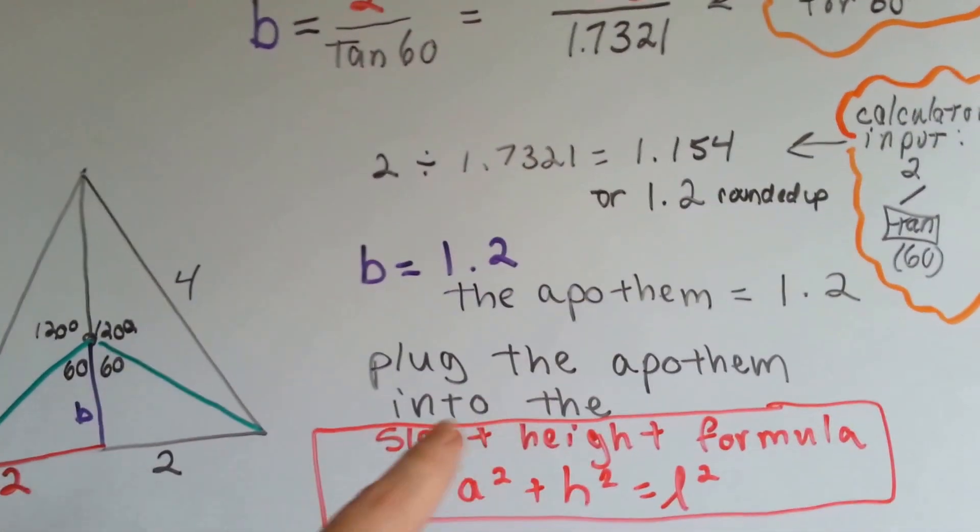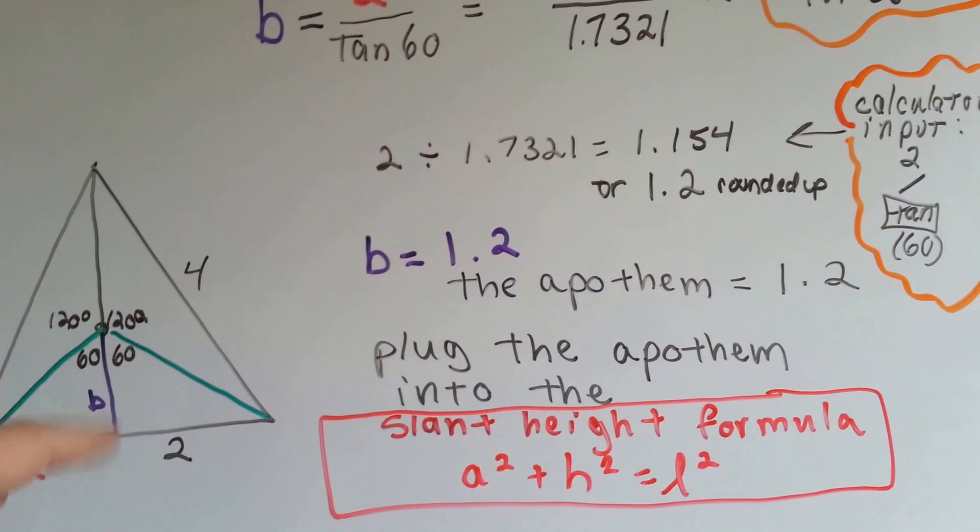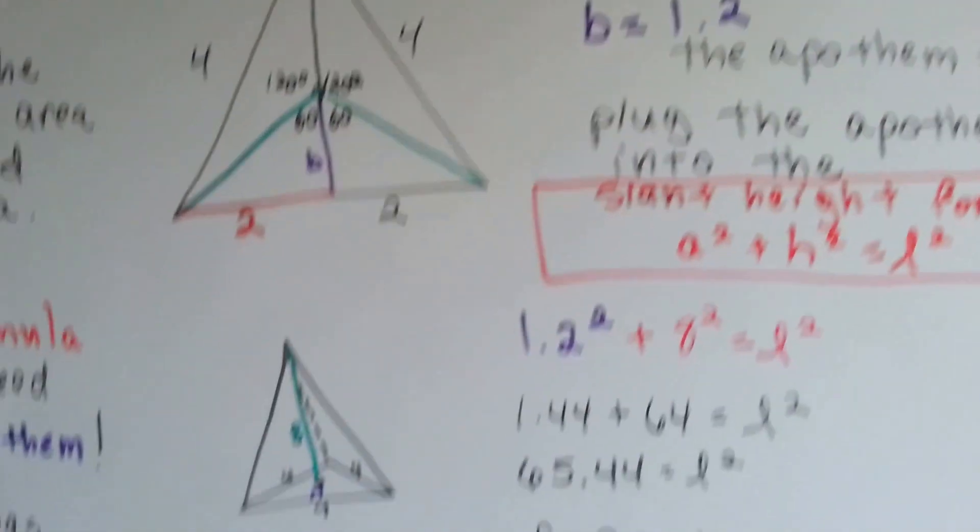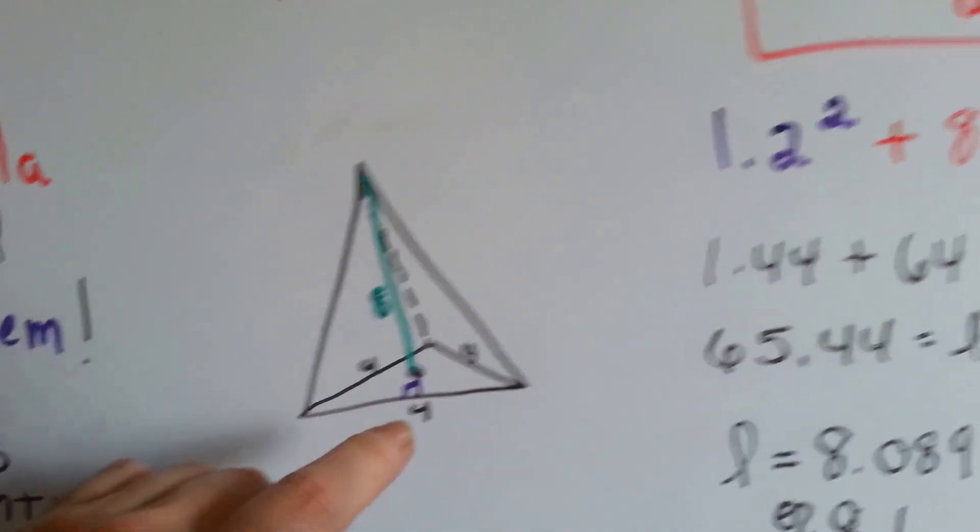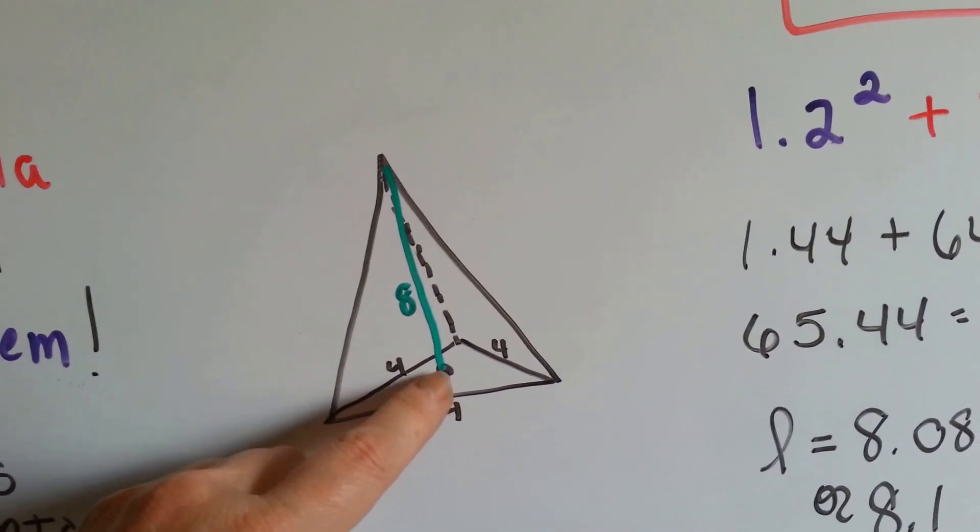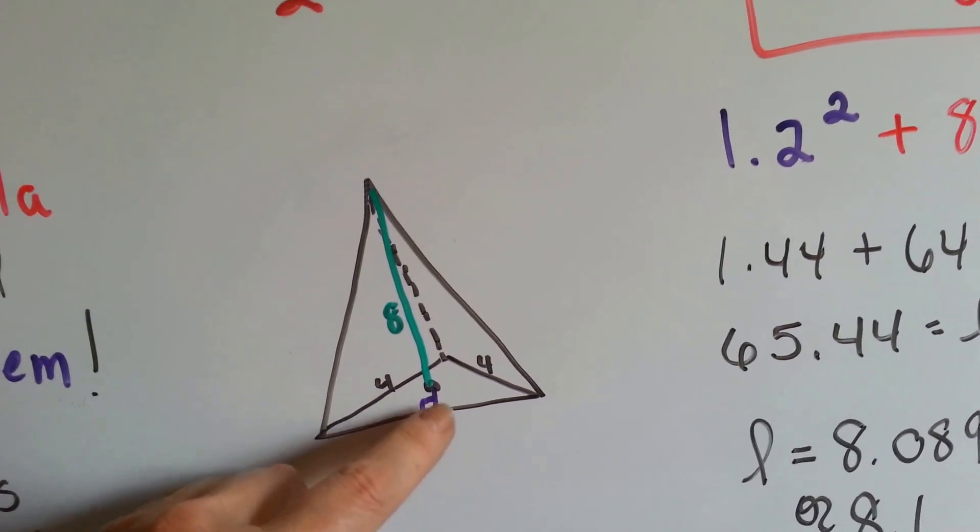So now we know the apothem, this little piece from the center to here is 1.2. So inside here, this little mark from the center down here to this side is 1.2, this tiny little piece.